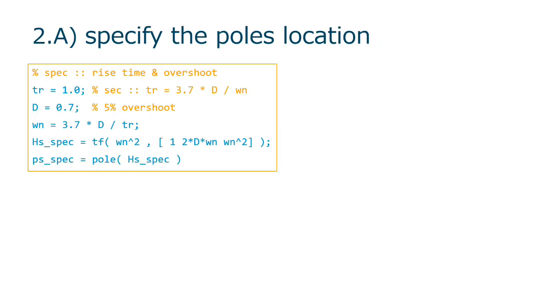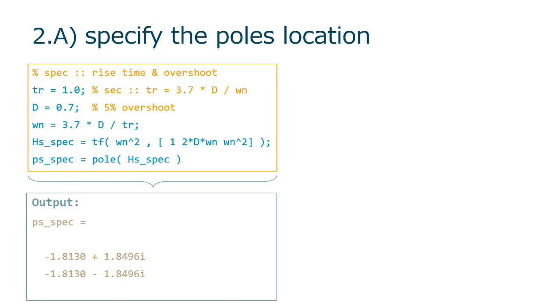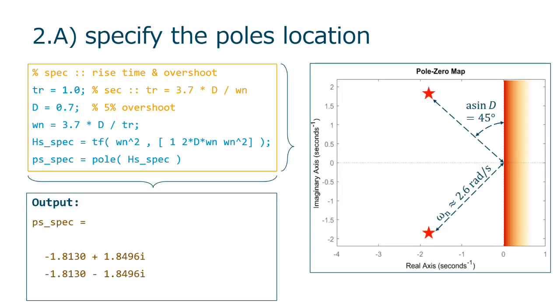Back to our script file, we ask for a rise time of one second, and we get the same pole location as before. Later on, you are supposed to change the specification values to optimize your controller.